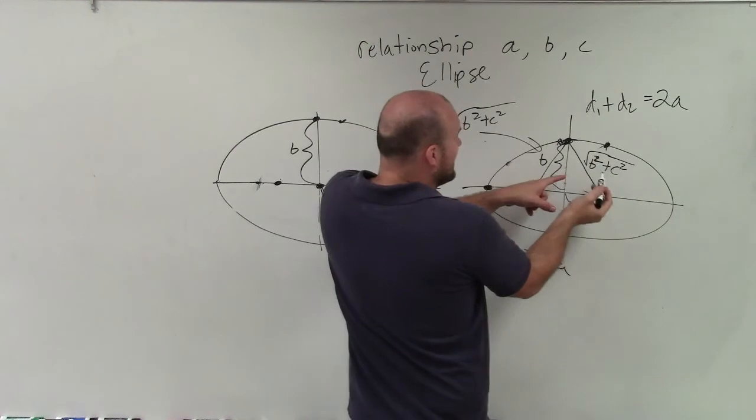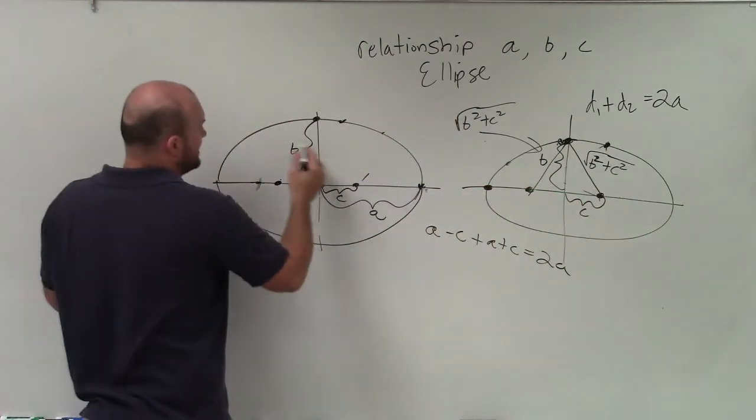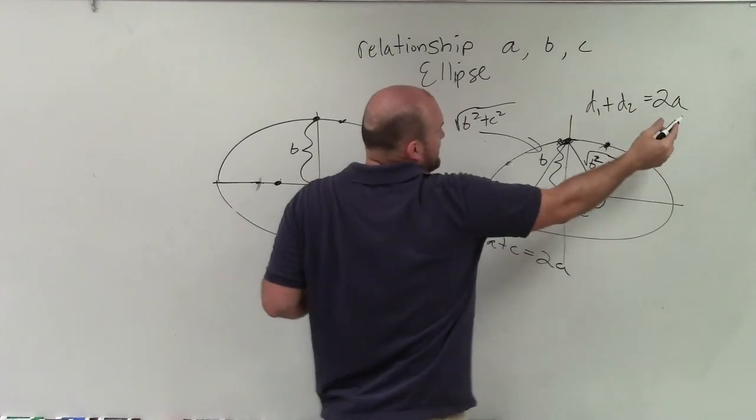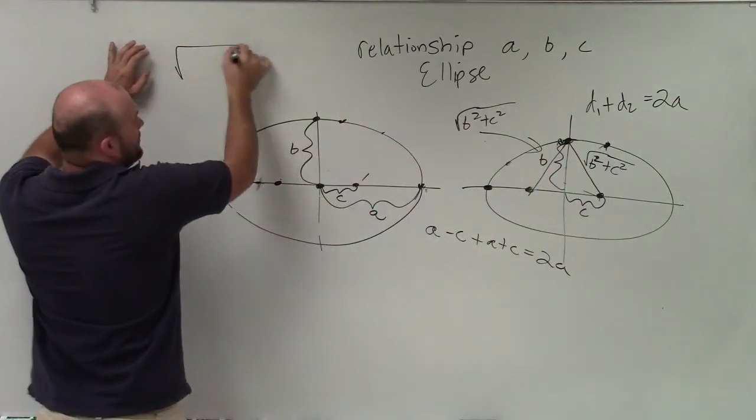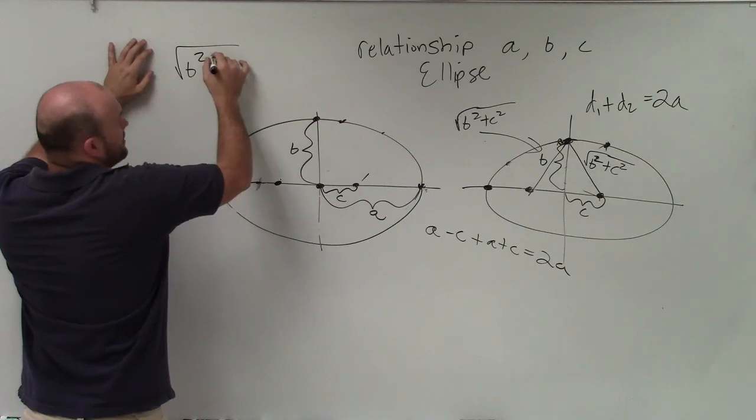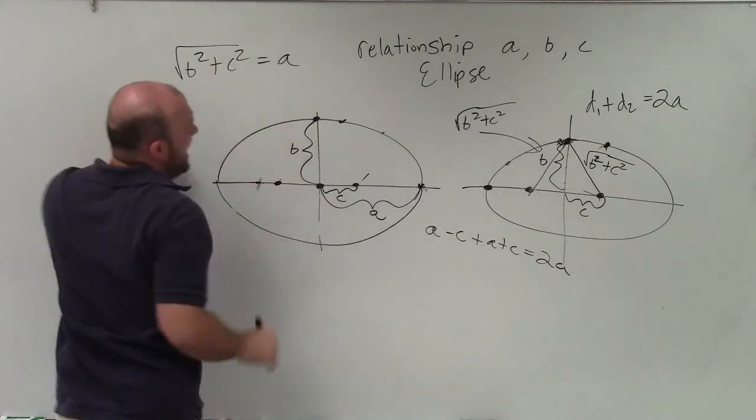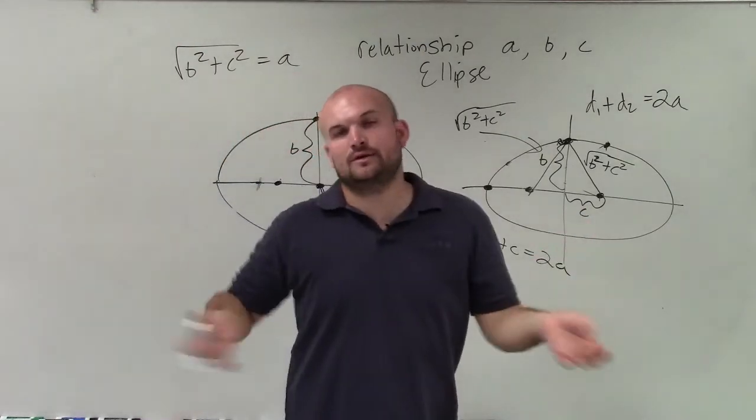Well, just one length, if just like I stated, if the sum of your two distances is 2a, well, then half of them would just be a. So I can say the square root of b squared plus c squared is equal to just a, right? Because two of them would be equal to 2a.